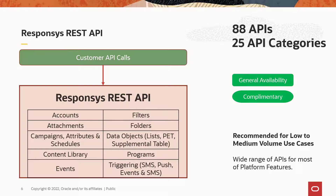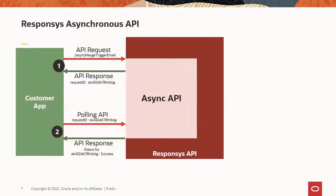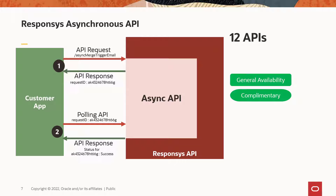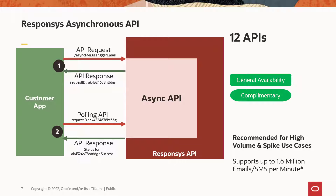With the Oracle Responses asynchronous REST API, there is asynchronous processing for the Merge Trigger Email and Merge Trigger SMS tasks. They are recommended for high volume and spike use cases, and can support up to 1.6 million email and SMS per minute.